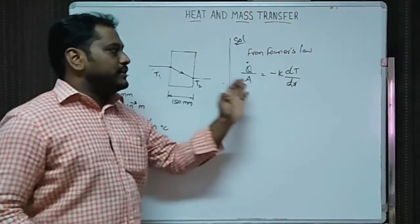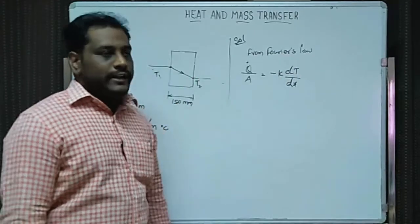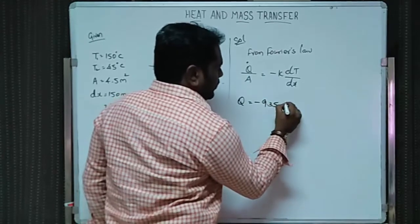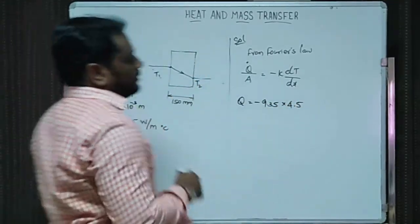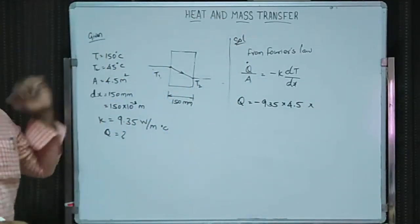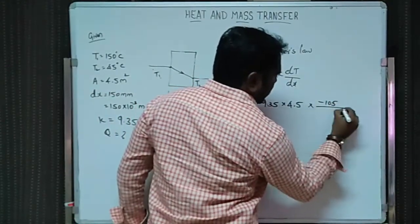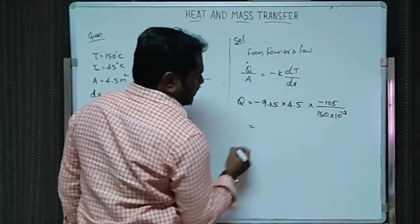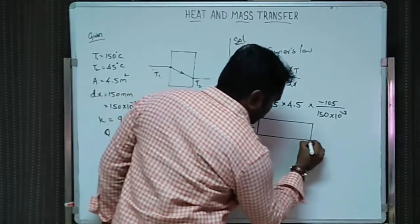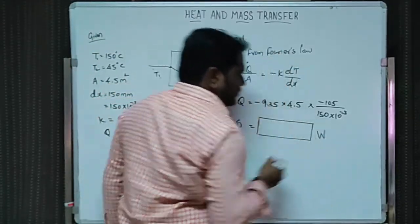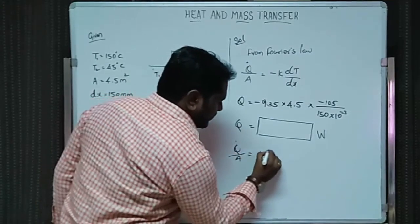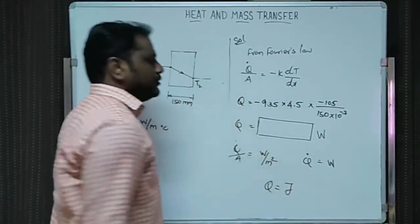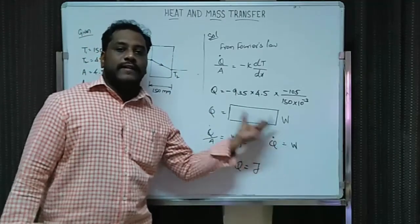Again, from Fourier's law: q-dot/A = −k × dT/dx. Here you are asked to find Q only, so substituting: Q = −9.35 × 4.5 × (45 − 150) / (150 × 10⁻³). The dT value is −105, divided by dx = 150 × 10⁻³. Solve to get the numerical answer. The unit of Q-dot/A is W/m², and Q-dot is watts. Find Q in watts and give that value.